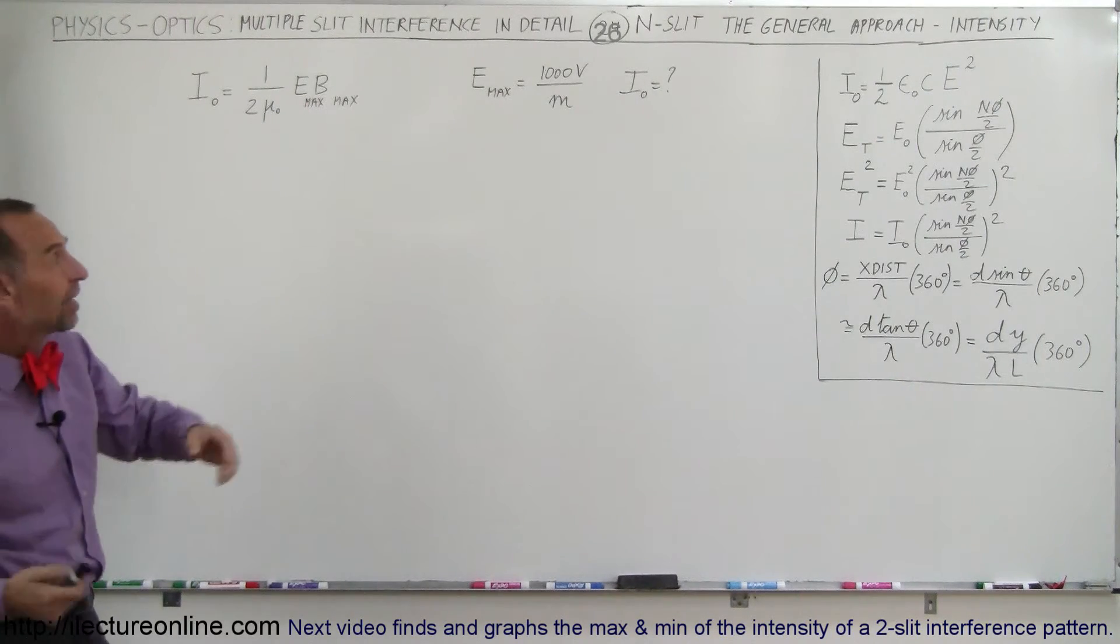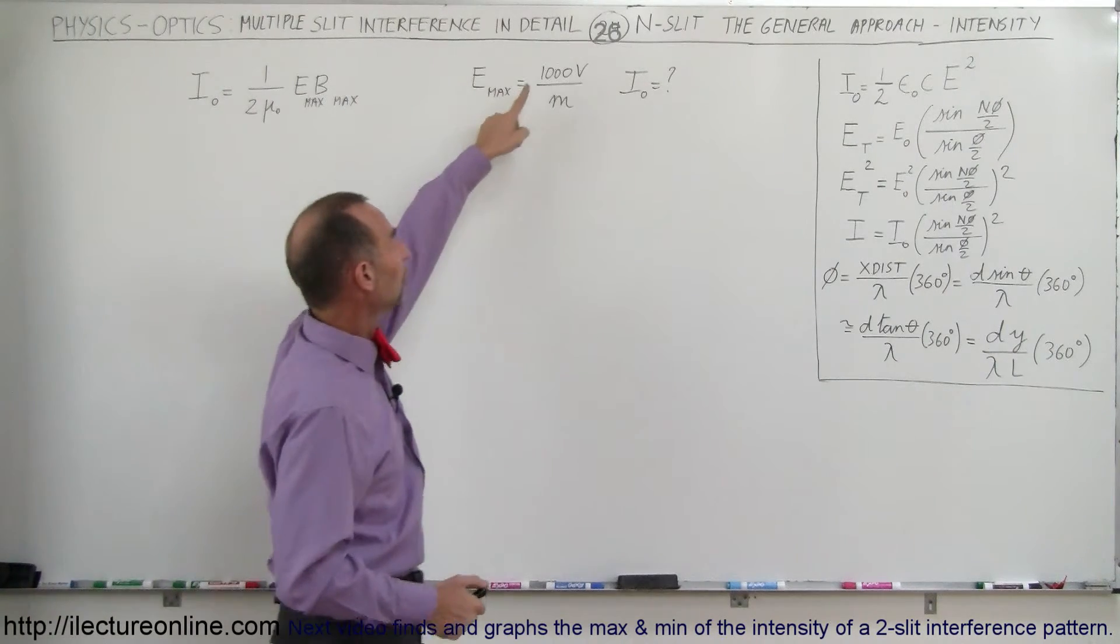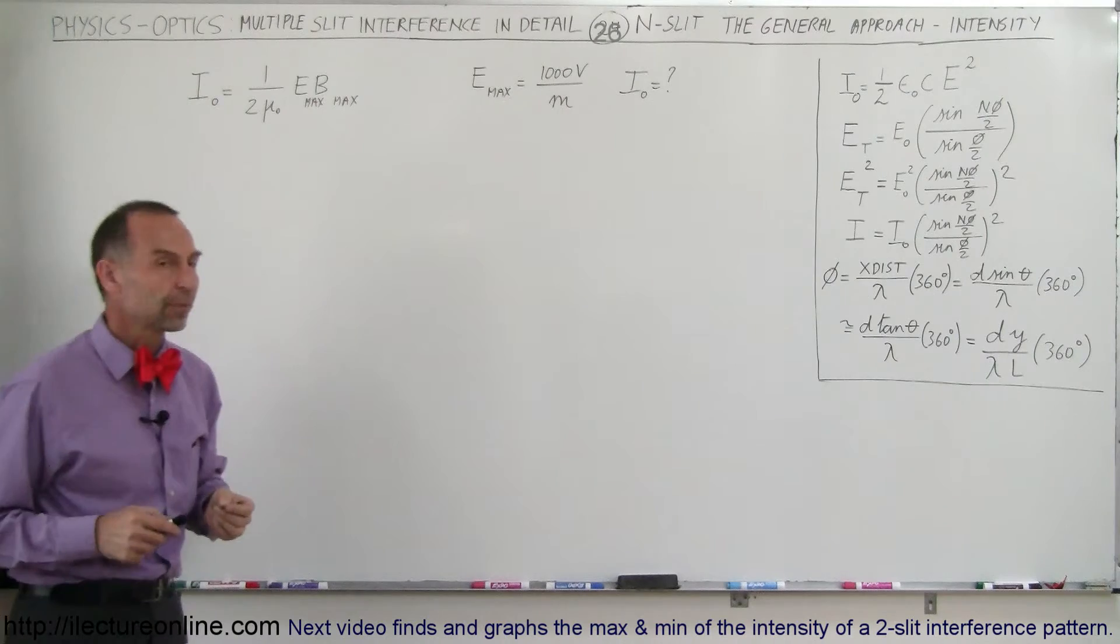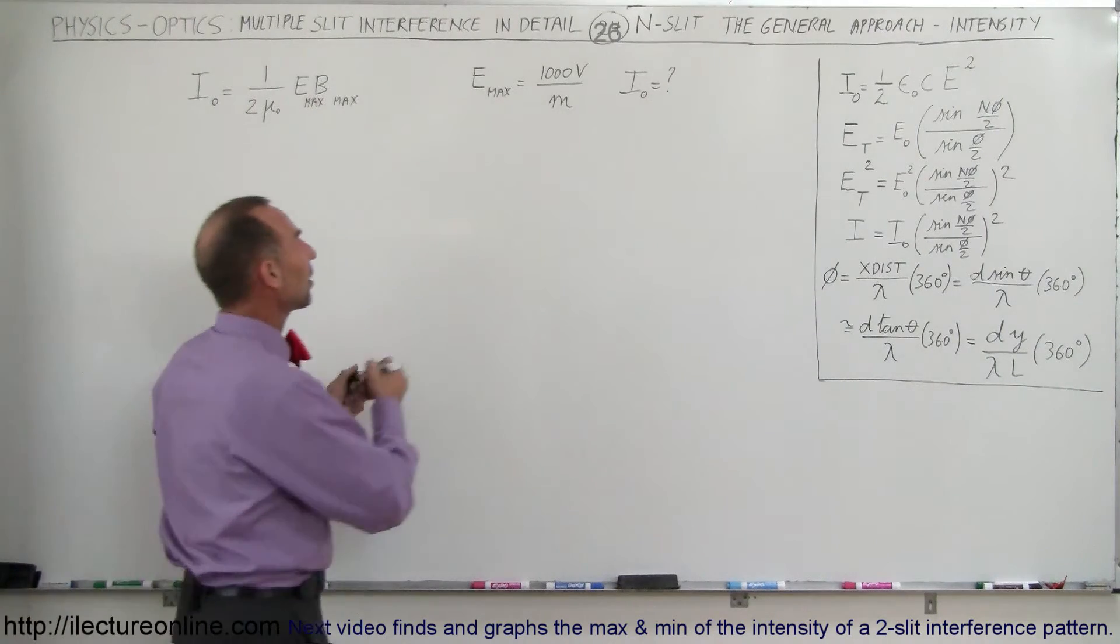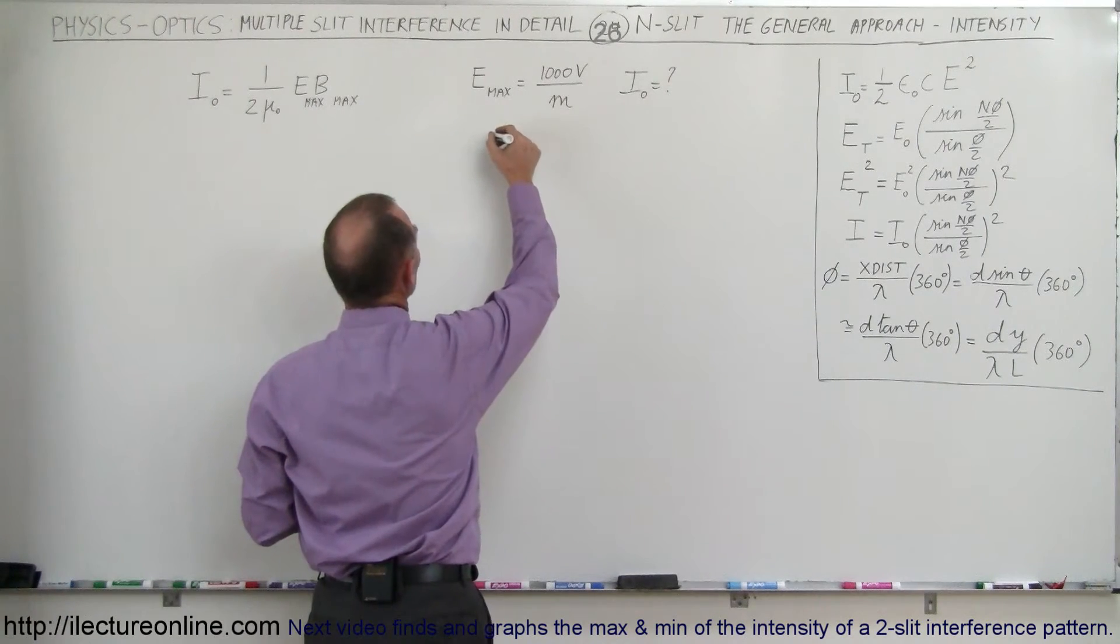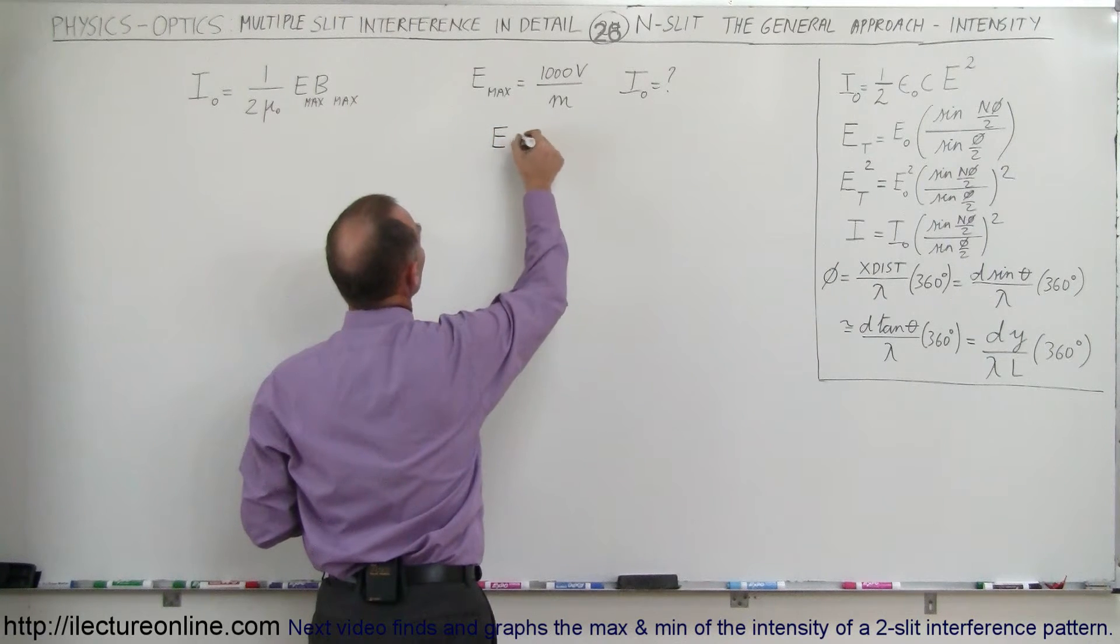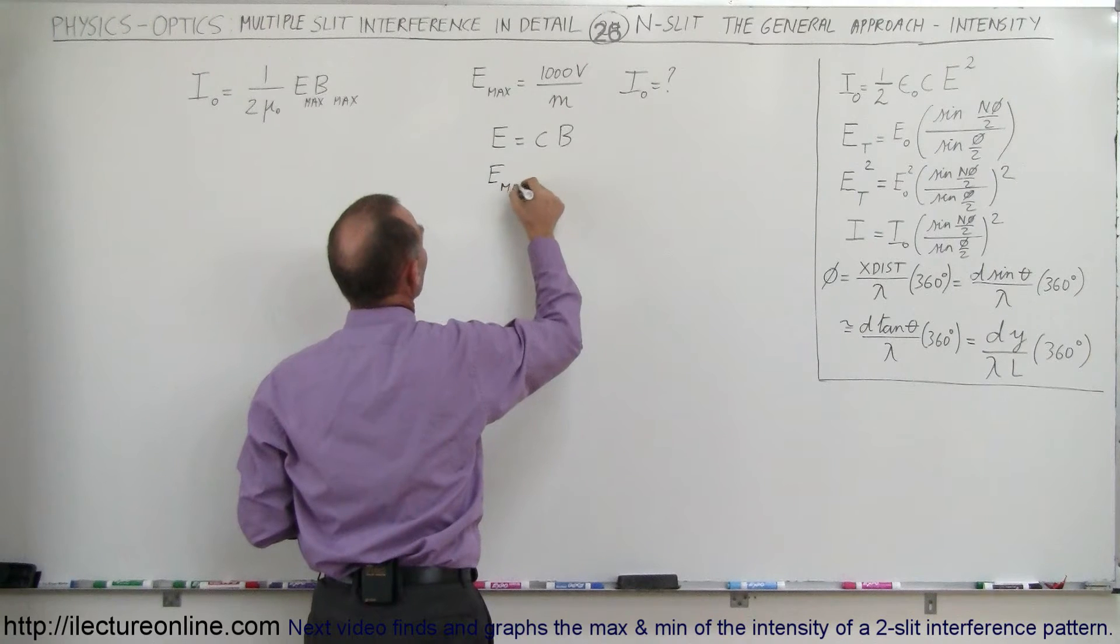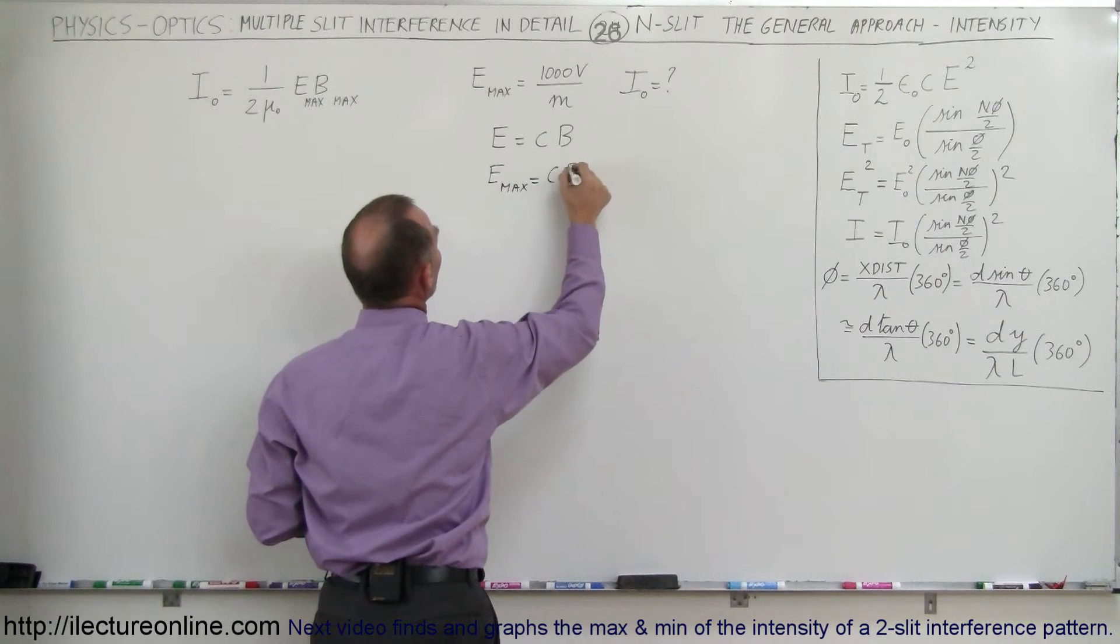Let's say that we have an example where the electric field oscillations are 1000 volts per meter. What is the intensity in that case? Well, it turns out there's a relationship between the electric field oscillations and the magnetic field oscillations. We can say that E is equal to C times B.